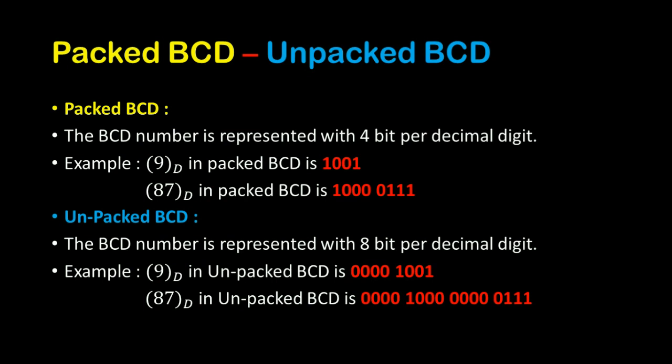And if you want to represent 87 as a decimal number in Packed BCD form, then it is represented as 10000111 — that is, for 8 we take 4 bits per decimal digit, and for 7 we take 4 bits per decimal digit.